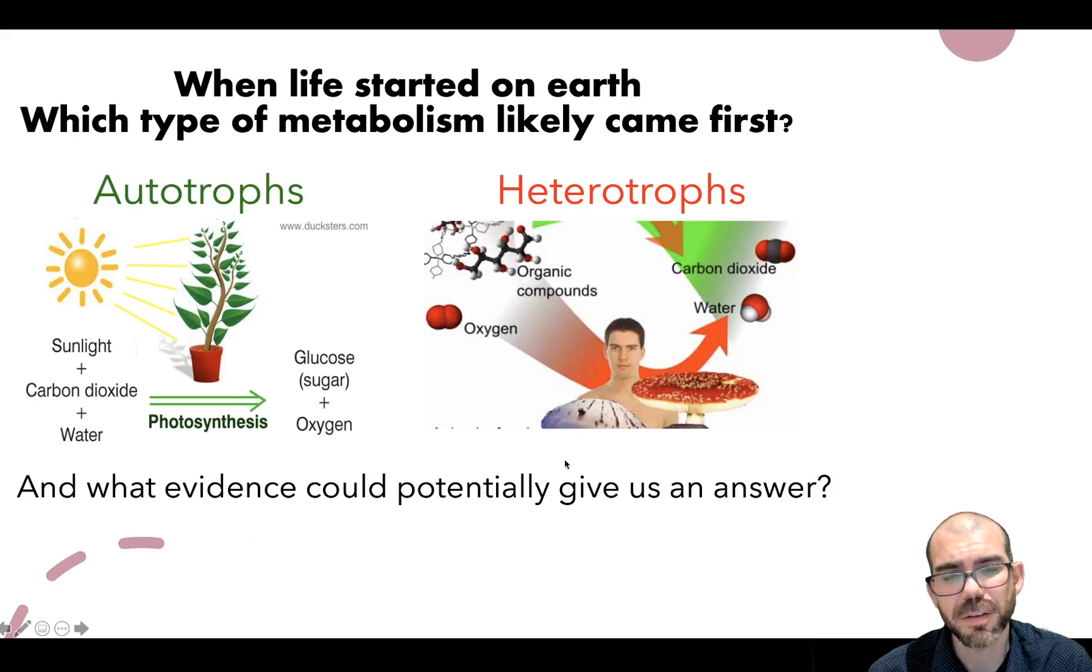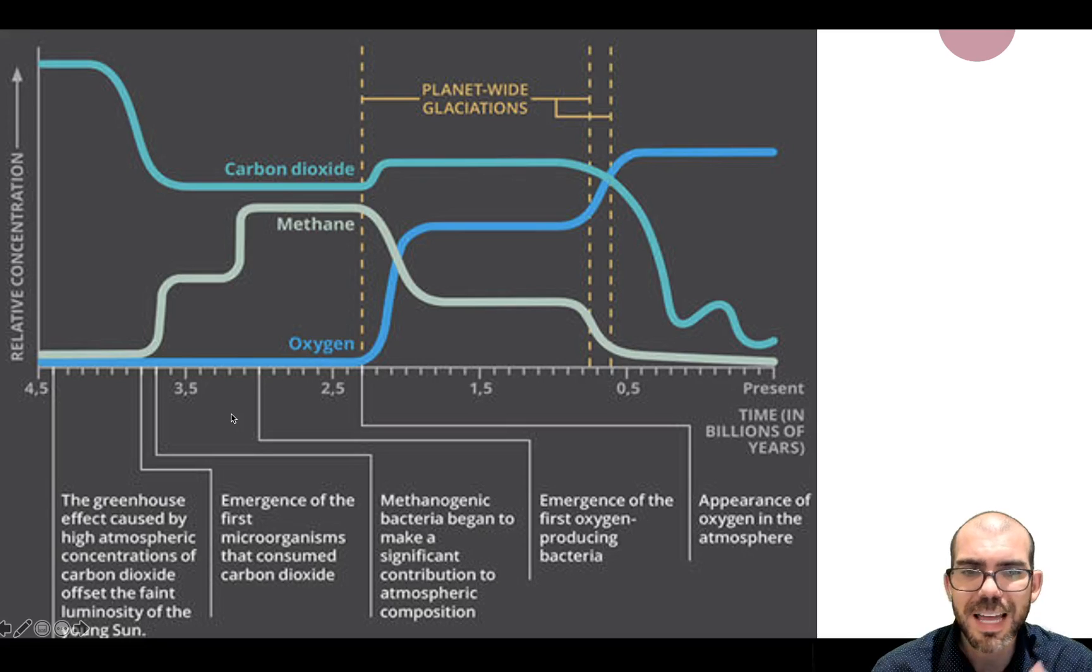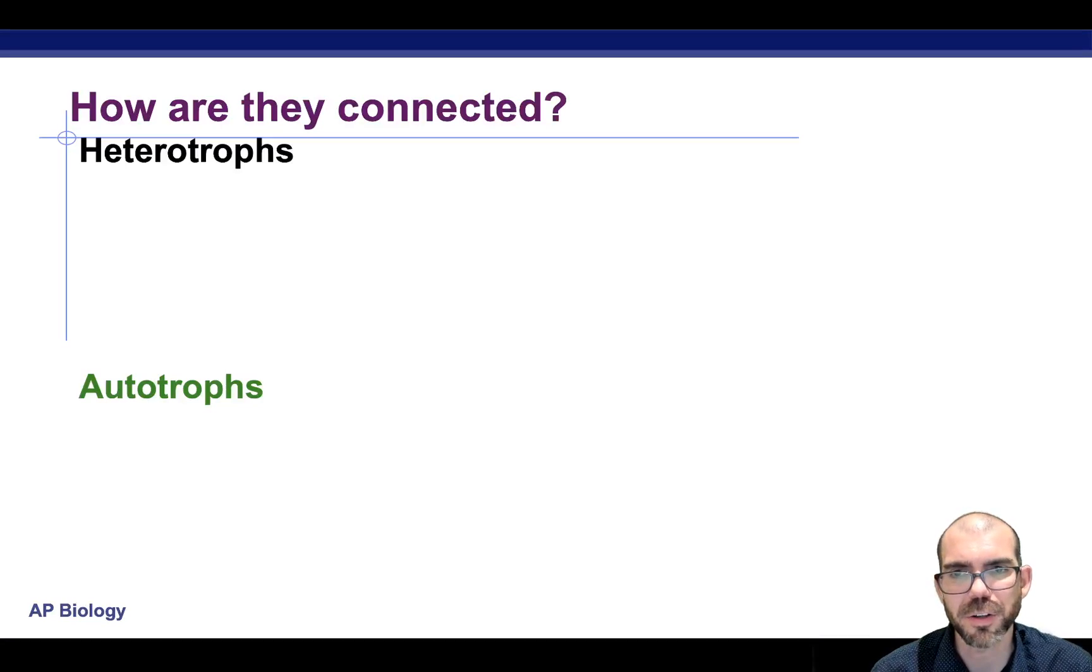Considering that oxygen is necessary for the heterotrophic pathway, but only CO2 is for autotrophs, this strongly suggests that autotrophic metabolisms, things like photosynthesis, is how the first living organisms on Earth primarily obtained the carbon energy-rich molecules you need to produce the energy required to survive.